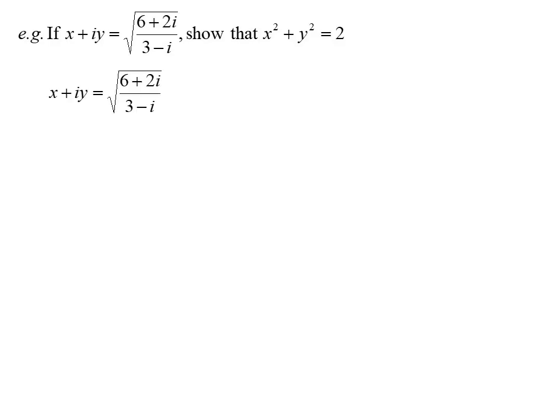We've been told X plus IY is this expression. If I square both sides, I'll get X plus IY squared is 6 plus 2I over 3 minus I. Now I could expand all that out and create simultaneous equations, it'll take me a while.